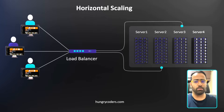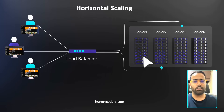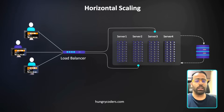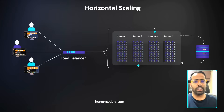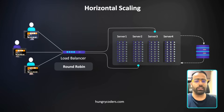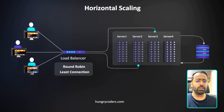The load balancer sends requests to any one of the servers based on different algorithms. The first is round robin — the first request goes to server one, then server two, three, four, and back again. The second commonly used algorithm is least connection — the load balancer checks which server has the fewest active connections and sends the request there.